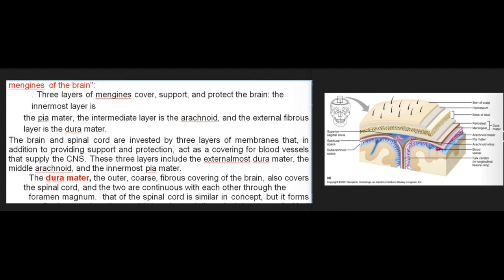The meninges of the brain consist of three layers that cover, support, and protect the brain. The innermost layer is the pia mater, the intermediate layer is the arachnoid, and the external fibrous layer is the dura mater. These three membranes, in addition to providing support and protection, act as a covering for blood vessels that supply the CNS.